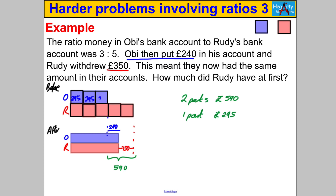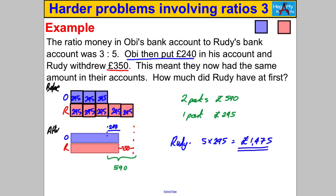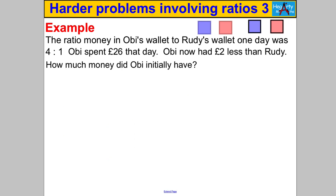How much did Rudy have at first? Rudy originally had five parts, so Rudy has 5 multiplied by 295. Working that out: Rudy's portion was 1,475 pounds. And you're done.